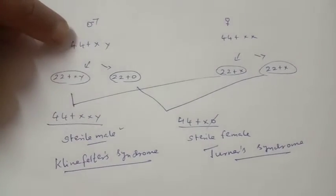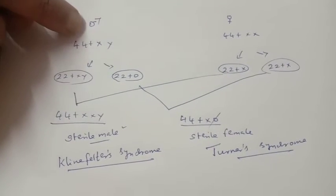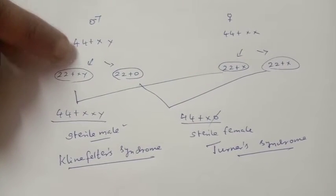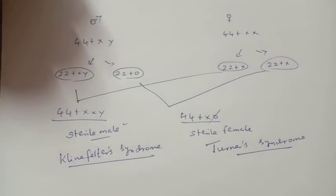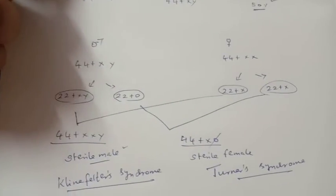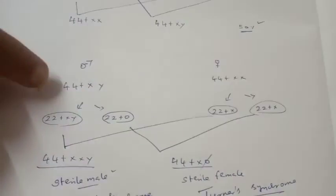this is male with 44 plus XY. At the time of meiosis, at the time of gamete formation, the chromosome number is generally reduced to half: 22 plus X, 22 plus Y. See here,